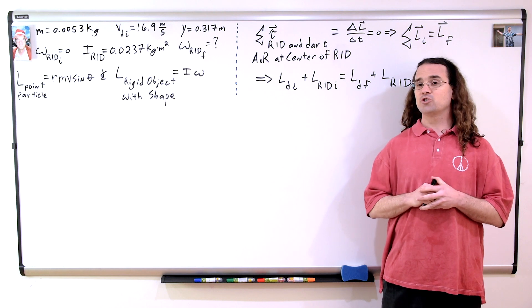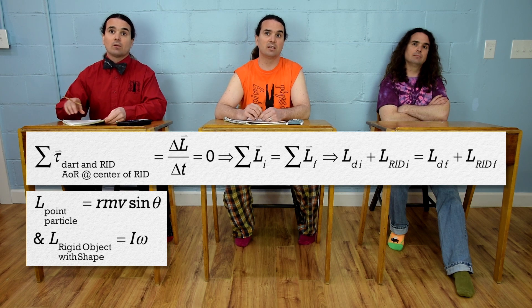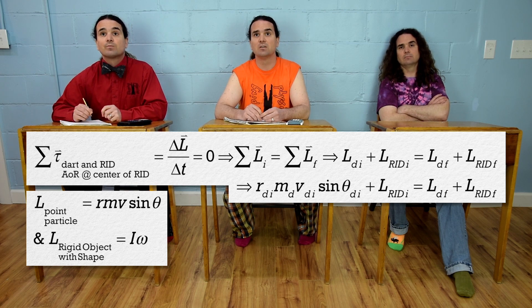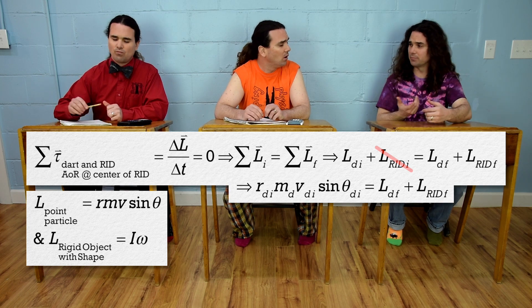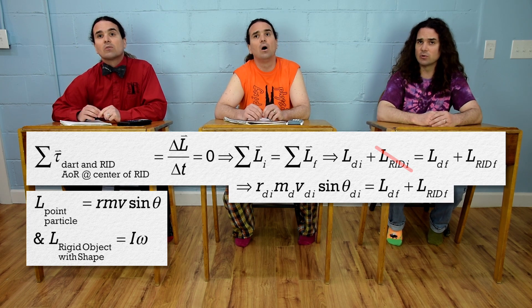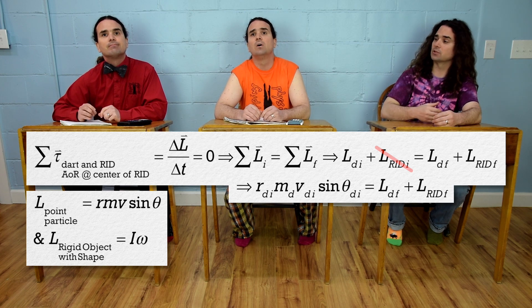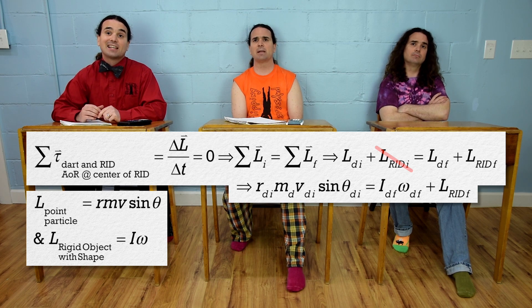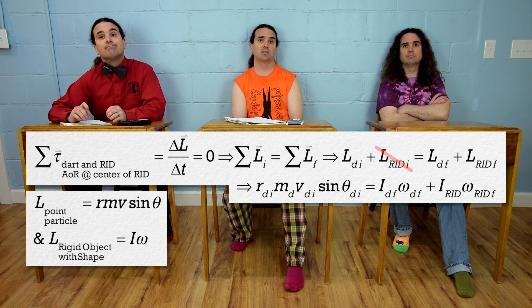Bobby, what equations should we use for the angular momenta of the objects? The dart is a point particle, so before the collision let's use the point particle equation. Before the collision the rotational inertia demonstrator is not moving, so it has zero initial angular momentum. After the collision, since the dart moves in a circle, we can use either equation — let's choose rotational inertia of the dart final times angular velocity of the dart final. For the final angular momentum of the demonstrator, it is a rigid object with shape, so its angular momentum is its rotational inertia times its final angular velocity.